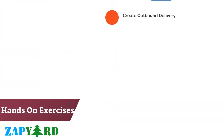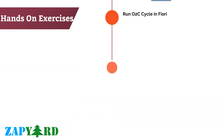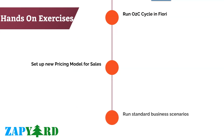Delivery, pick-pack, post goods, and billing are also important integral parts of the sales and distribution process. We will create deliveries, perform picking, post goods issues, and then create the follow-up billing document. The trainer will run the full order-to-cash cycle in SAP GUI and also showcase the corresponding Fiori applications.